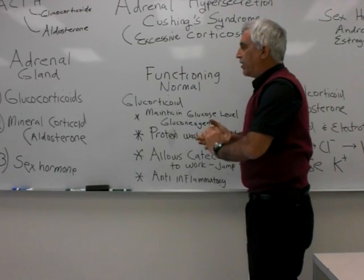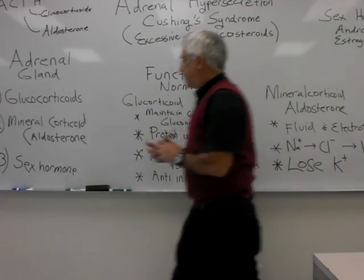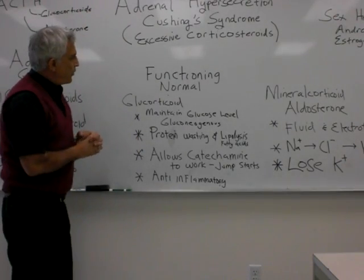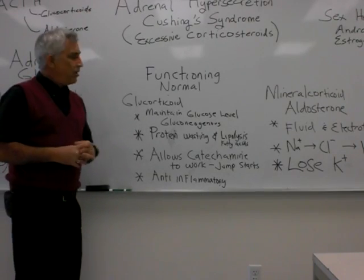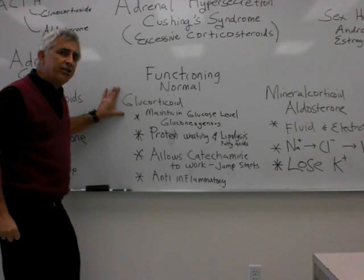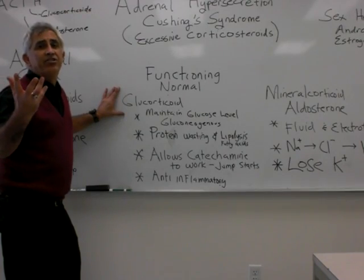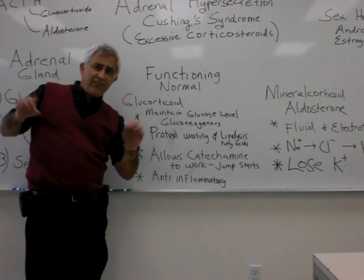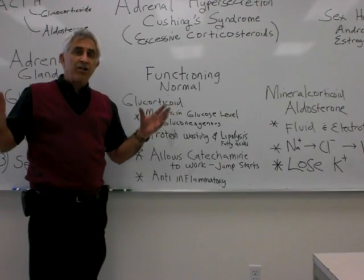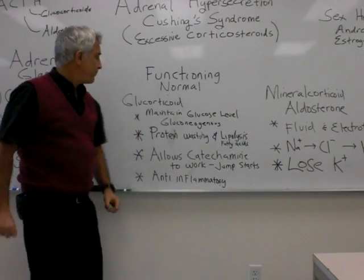Now let's look at the individual hormones. First, glucocorticoids — you would not live without them. We make about 20 milligrams of cortisol per day, but in an emergency situation, we may need up to 200 milligrams. Stressful events like surgery, getting married, an auto accident, or a burn will greatly increase your glucocorticoid demand.